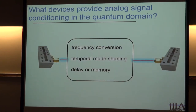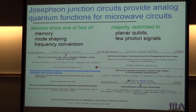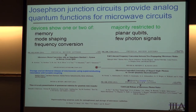So the question is: what element do we interpose between two microwave cavities to allow frequency conversion, temporal mode shaping, and provide a delay or memory function? In the past year or two, there have been seven high-profile papers addressing different aspects of this question — can you build a memory for propagating microwave modes, shape the emission or absorption, and convert between different frequencies? Each of those papers addresses either one or two of those functions, and most are limited to planar qubits working with just a few-photon signals.